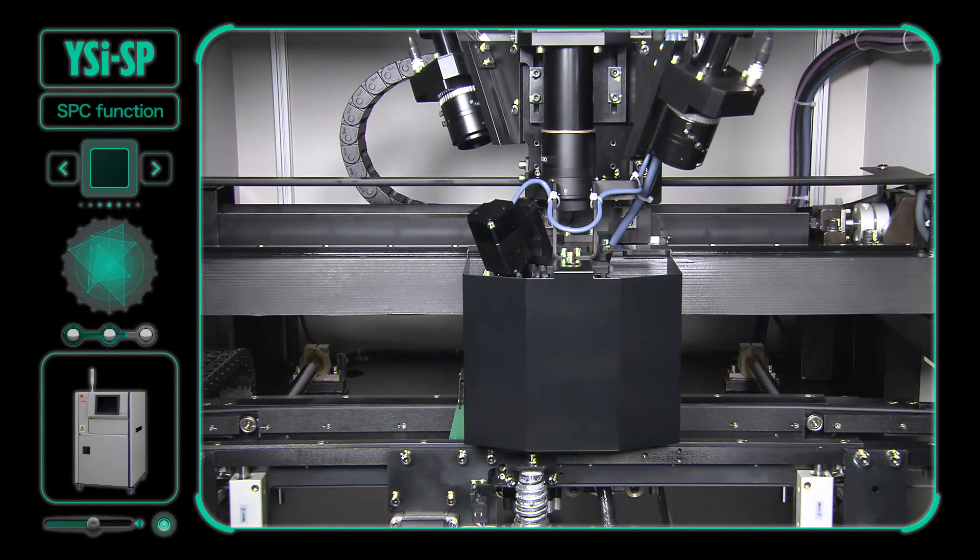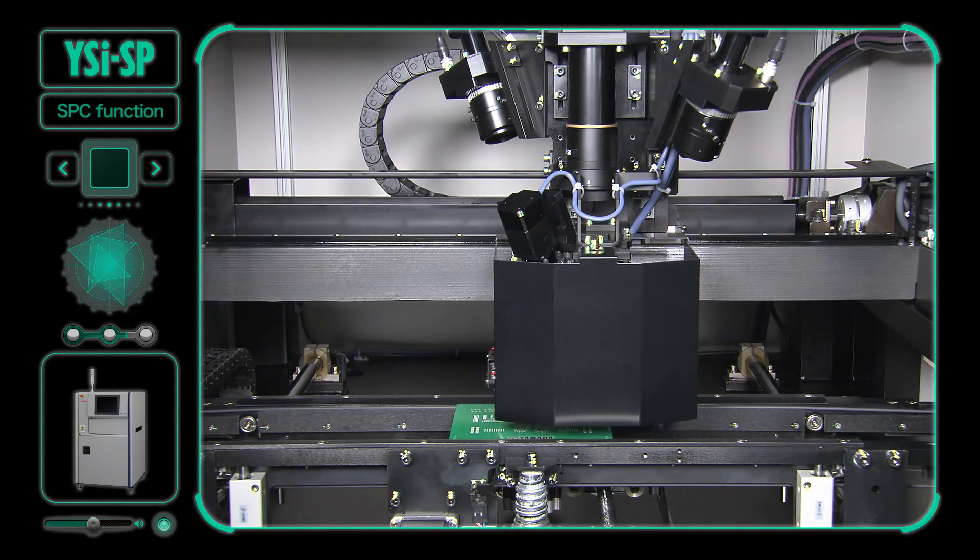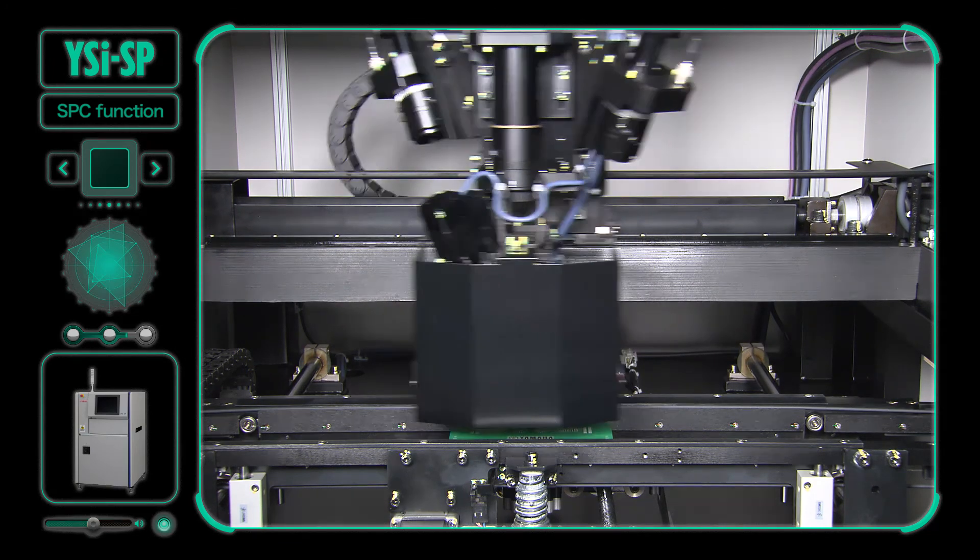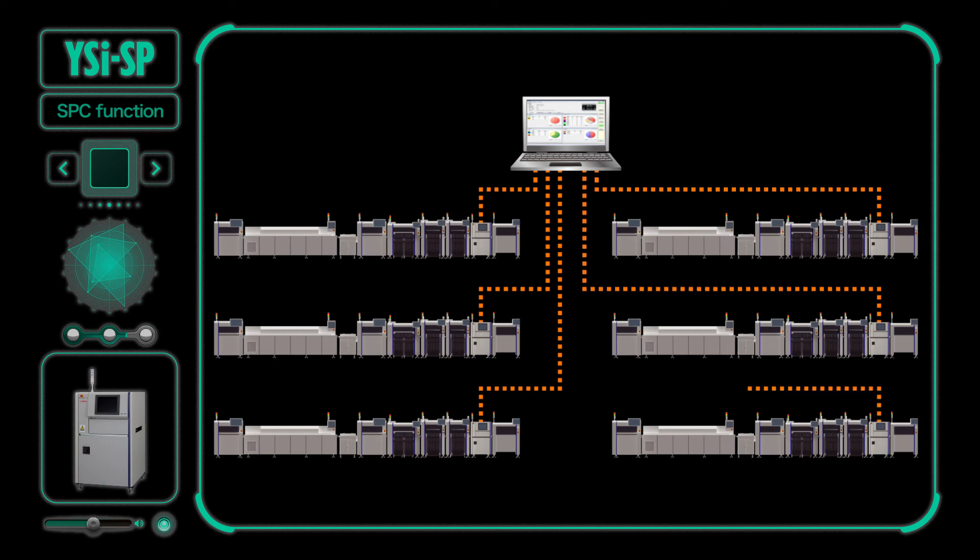The YSISP also has SPC function, which can perform various statistical processing of PCB data. This function stores all pad images and measurement data to make various types of analysis. One PC can connect to a maximum of 6 SPI units and output data in CSV format.